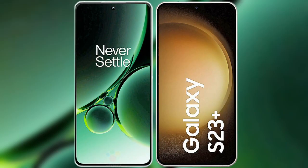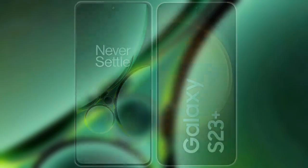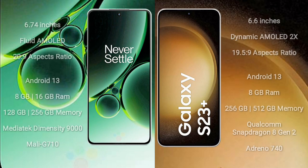I will compare the new OnePlus Nord 3 with Samsung Galaxy S23 Plus. OnePlus Nord 3 comes with a 6.74-inch flat AMOLED display and aspect ratio 20:9. Samsung Galaxy S23 Plus comes with a 6.6-inch dynamic AMOLED display and aspect ratio 19.5:9.